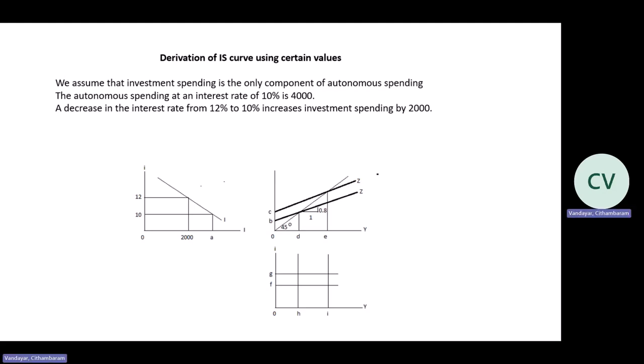We're required to give values to A, B, C, D, E, F, G, H, and I. This question deals with the derivation of the IS curve based on the information provided. The first thing is to calculate A. The value of A is 4,000 rands — because given in the question, at an interest rate of 10%, your autonomous spending is 4,000.